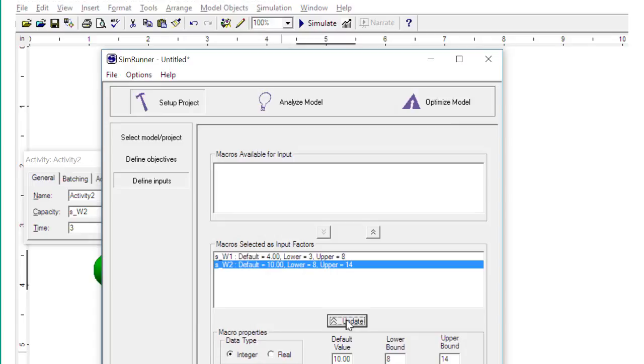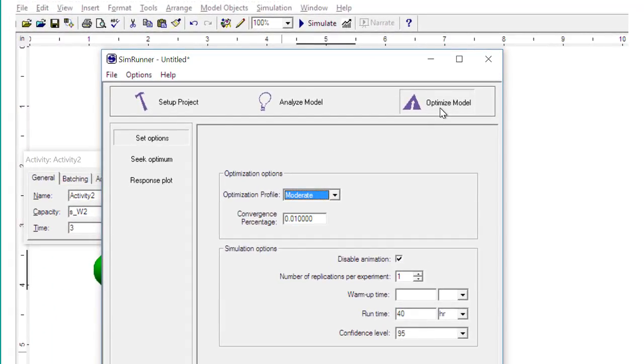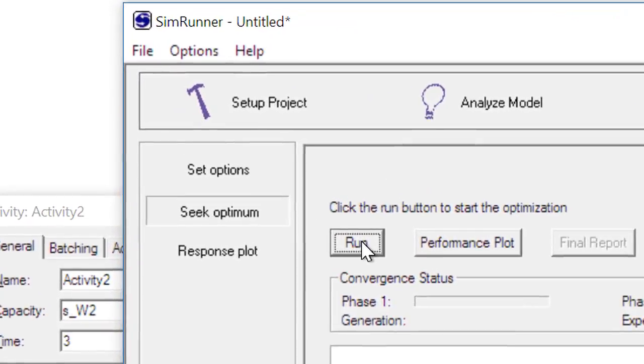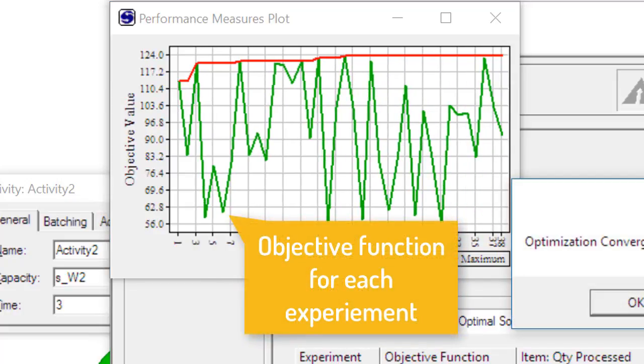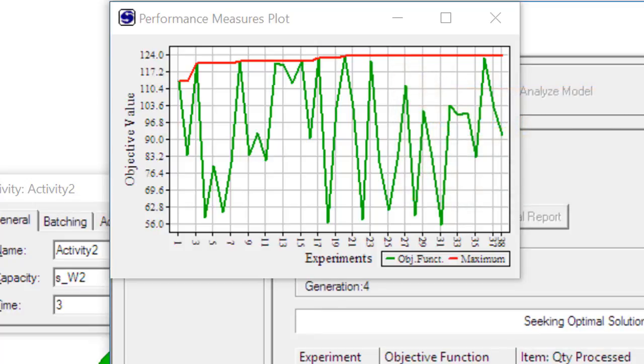Next, run the optimization. You will bypass a few options by clicking the optimize button. In this simplified example, there is no variability, so no replications will be used. In your models, use replications. Go to the next page and click run. The graph shows the progression of the optimization. The green line represents the value of the objective function for each experiment. The red line represents the best objective function value. As the optimization progresses, every time the red line moves up, an experiment has performed better than any previous.